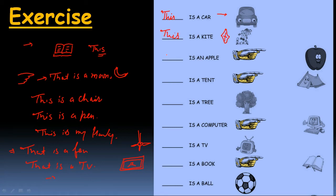अब exercise करते हैं। एक apple है — 'this is an apple'। एक tent है — finger भी mention कर रहे हैं कि वो चीज़ दूर है हमसे — तो क्या use किया? 'That'। That is a tent।